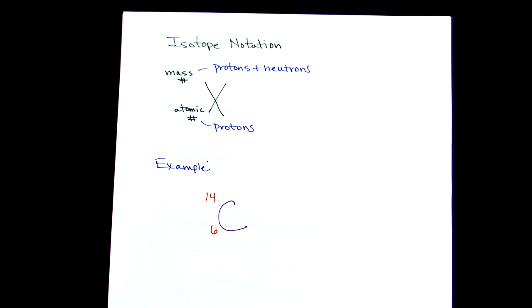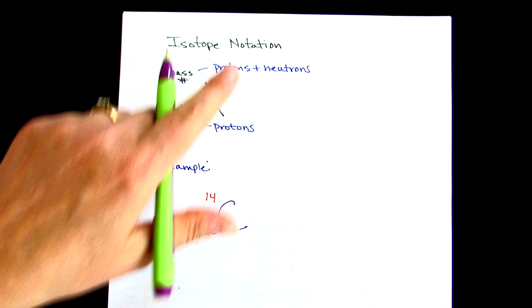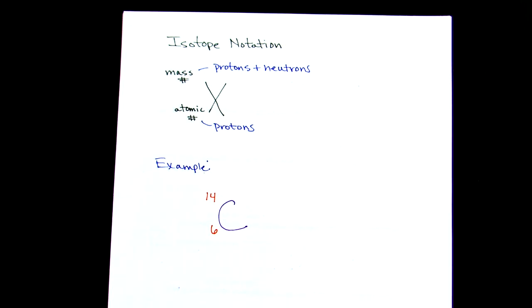So with that isotope notation, I can figure out how many neutrons there are. Because remember, protons plus neutrons equals the mass number.